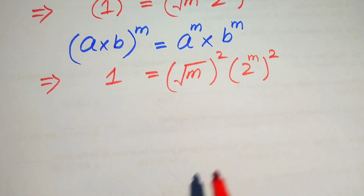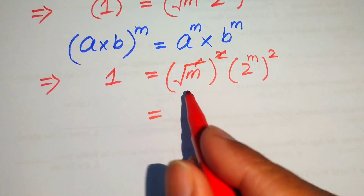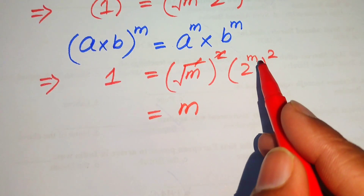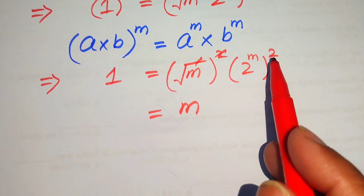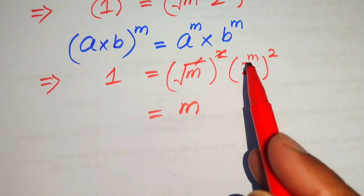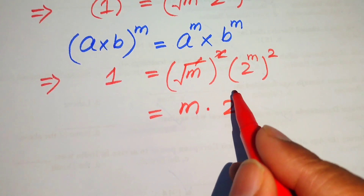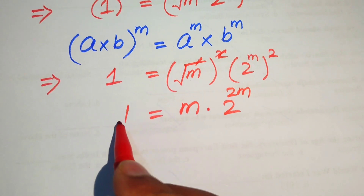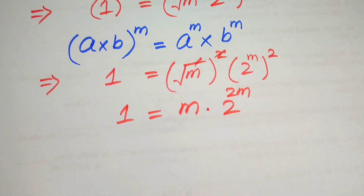The square cancels the square root, giving us m. Then applying the exponent-of-exponent law — where two exponents multiply — we get 2 to the power of 2m. So the equation becomes 1 equals m times 2 to the power of 2m.